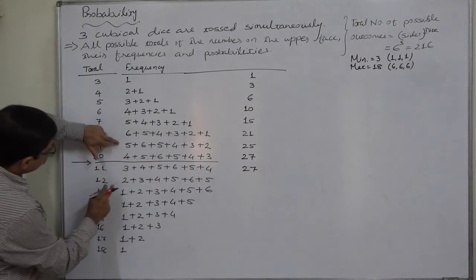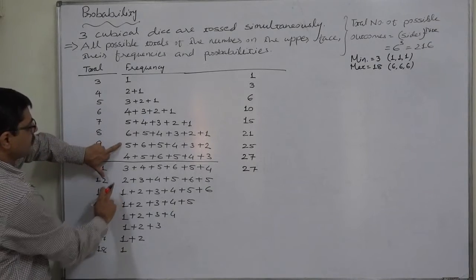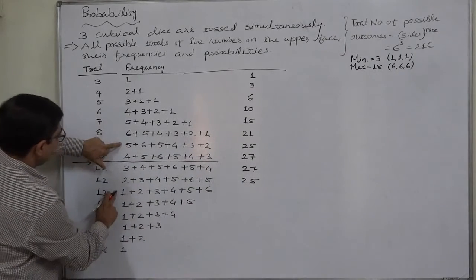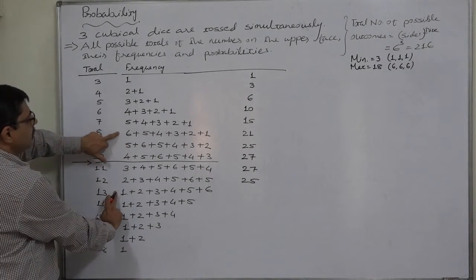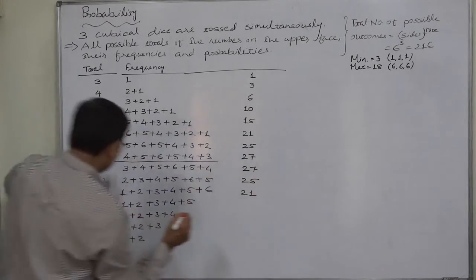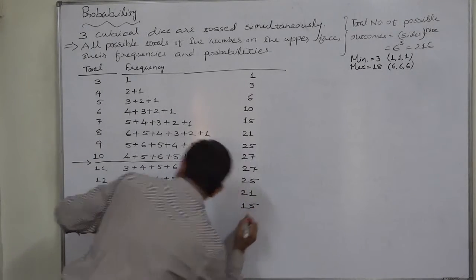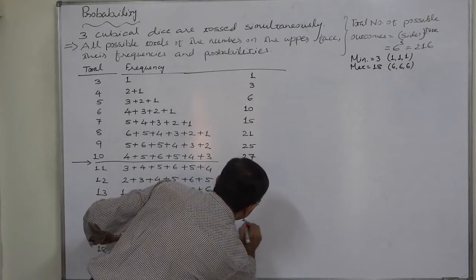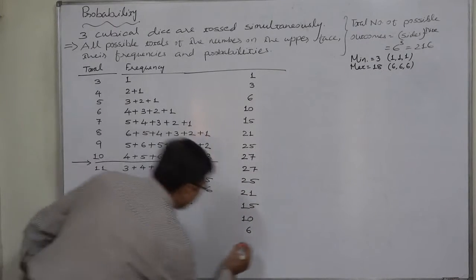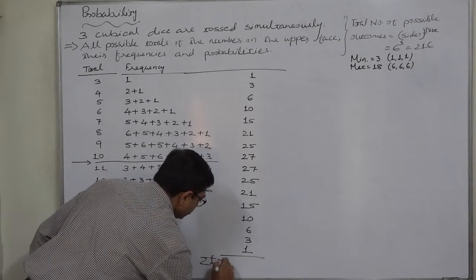Now we know that the pattern for eleven is the reverse of ten, so frequency of eleven is also 27. Similarly, twelve is the reverse of nine, so frequency is 25. Pattern of thirteen is reverse of eight, so it is 21. Similarly fourteen gives 15, fifteen gives 10, sixteen gives 6, seventeen gives 3, and eighteen gives 1.